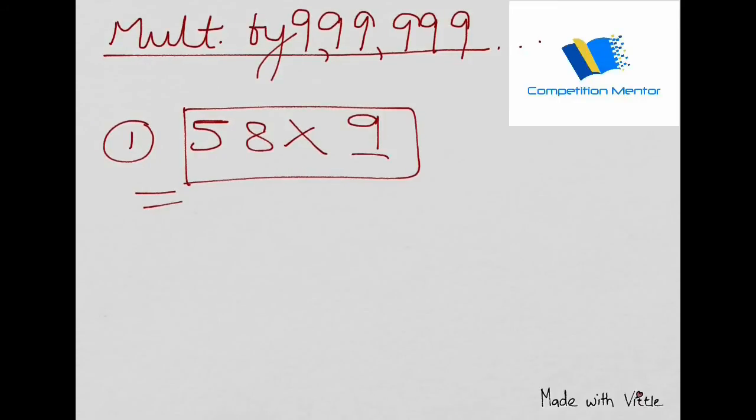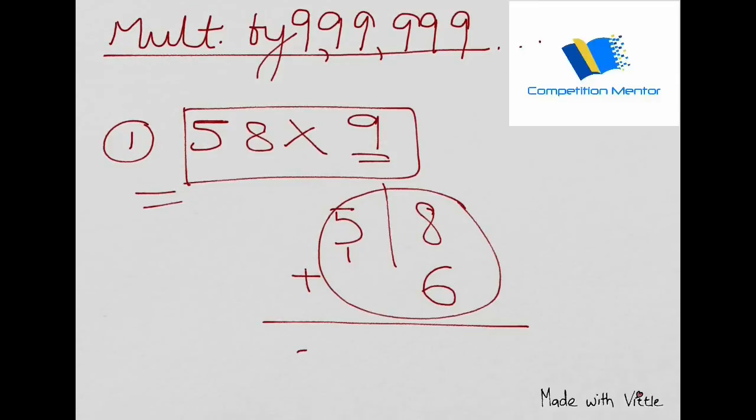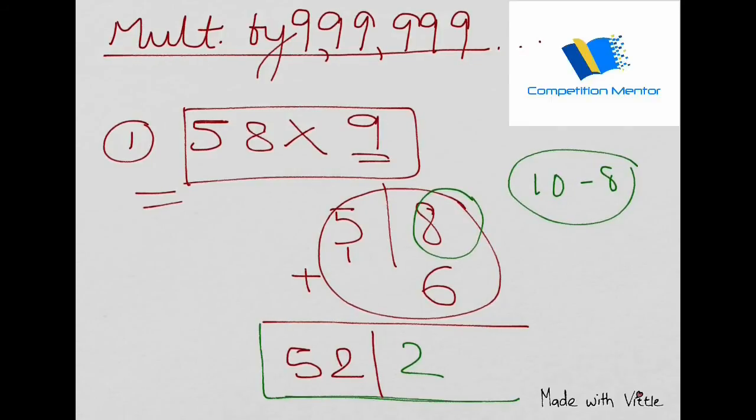If there is one nine, partition them into one part. You just add 5 plus 1 which is 6, keep it here. Now subtract 58 minus 6, that is 52 simply. And then now for the second part you will take 10 minus 8, that is 2. Don't do 8 minus 6 is 2, this is 10 minus 8 is 2. So this is a two part.